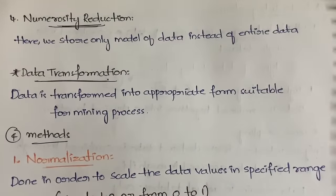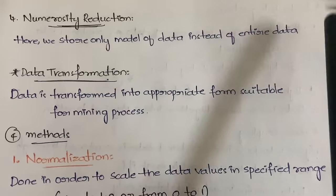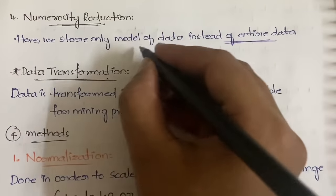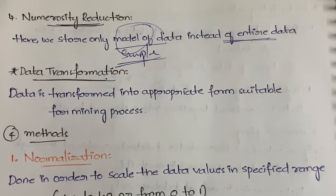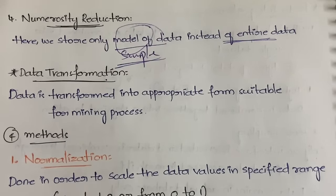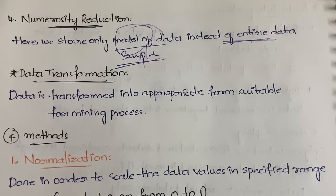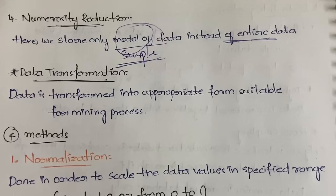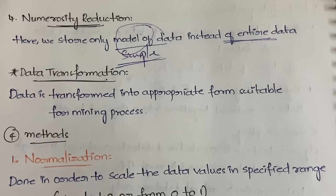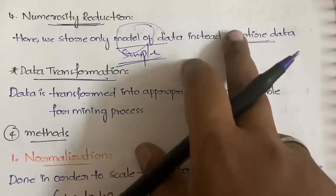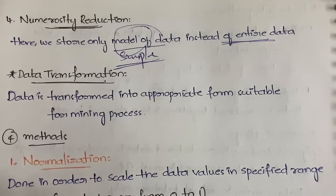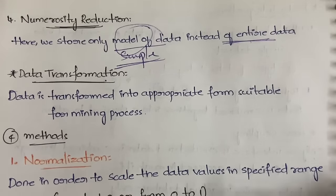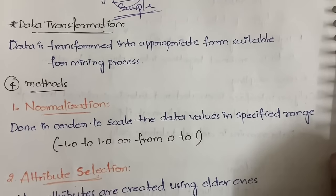Fourth is numerosity reduction, where instead of storing the entire dataset, only a sample or model of the data is stored. For example, in college lab records, instead of storing all 60–65 student records, only 5–6 are kept for reference. Similarly, in numerosity reduction, only a representative sample of data is retained. That completes data reduction.